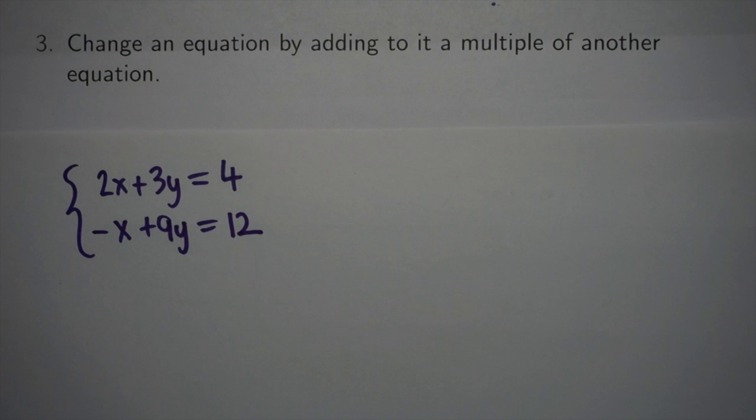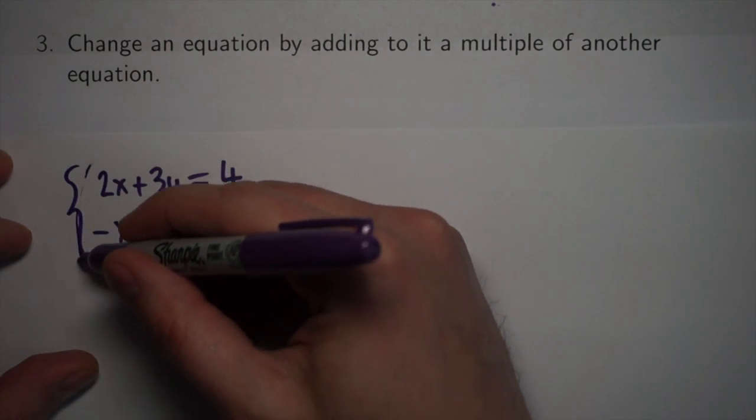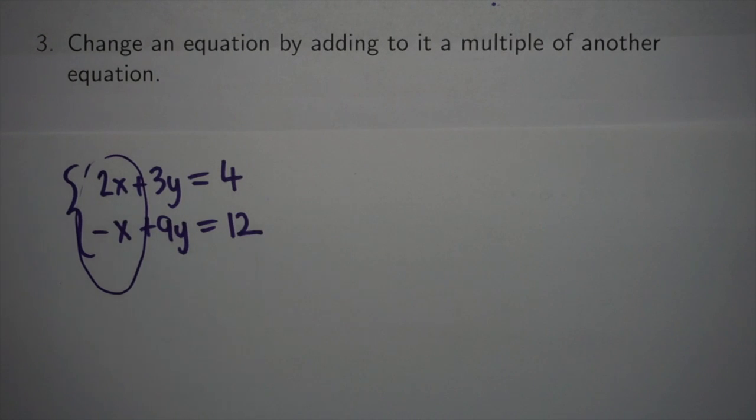The third action is much more complicated, but also the most useful. It's changing an equation by adding to it a multiple of another equation. This could be as simple as adding two equations together, but generally speaking, your coefficients aren't going to match up that way. In this example, the 2x and the minus x won't add to eliminate one of the variables.